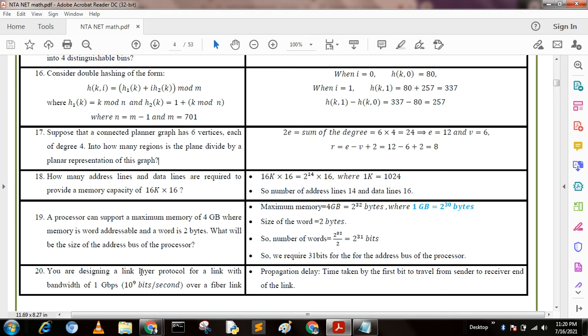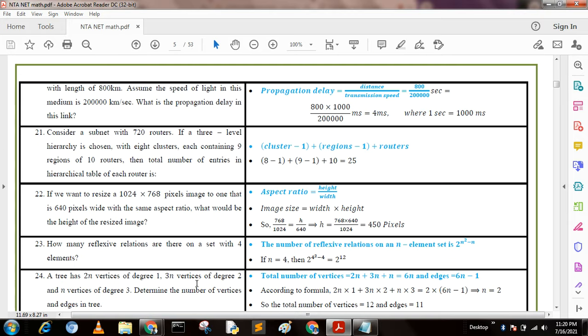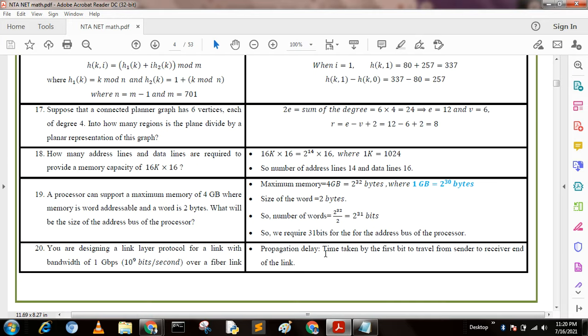We are designing a data link layer protocol for a link with bandwidth 1 Gbps over a fiber link with length 800 kilometers. Assume the speed of light in this medium is 2 × 10^5 kilometers per second.